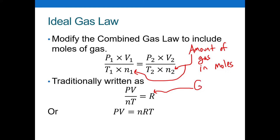This R is the ideal gas constant. In Boyle's law, PV was equal to some constant; in Charles's law, V over T was equal to some constant; in Gay-Lussac's law, P over T was equal to some constant. Well, that constant happens to be R — that's what we call the ideal gas constant. We can actually calculate what the ideal gas constant is.